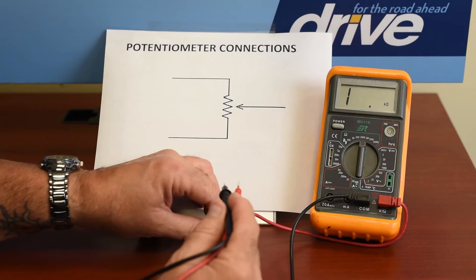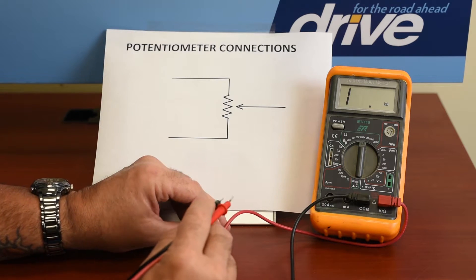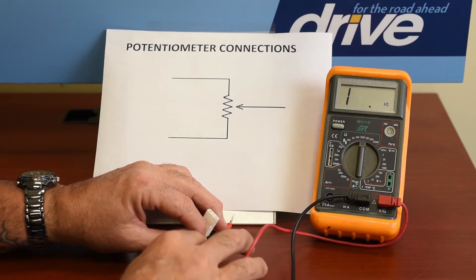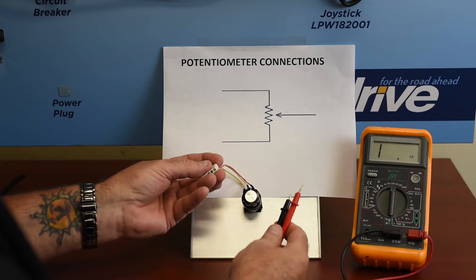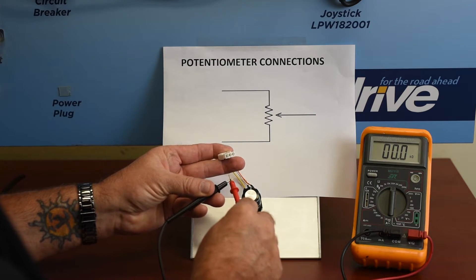Then we're going to check from the outside to the center, and then the other outside to the center to make sure that our swing is correct. What we'll do first, again, is we touch the leads together to make sure that it's working.